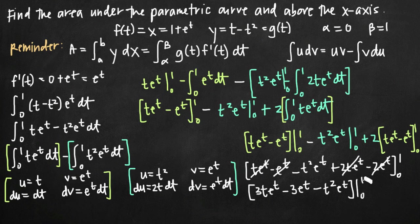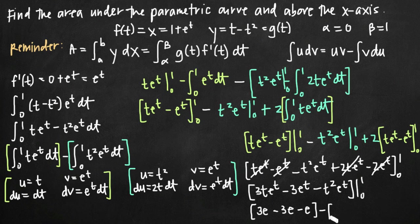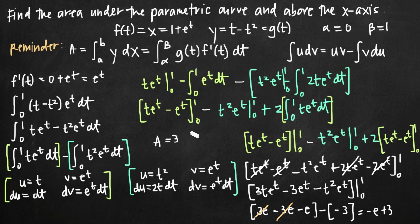Plugging in the upper limit t equals 1: we get 3 times 1 times e equals 3e, minus 3e to the 1 which is minus 3e, minus 1 squared times e which is minus e. Then subtracting what we get at t equals 0: 0 minus 3 times e to the 0 equals minus 3, and the last term is 0. So our 3e and minus 3e cancel, leaving negative e minus negative 3, which gives us 3 minus e. The area equals 3 minus e.